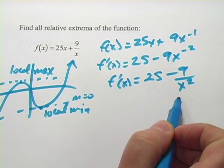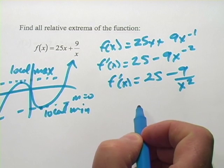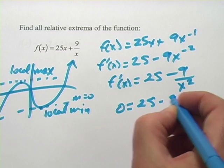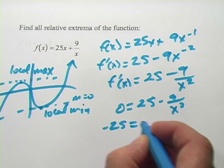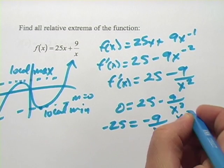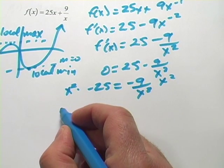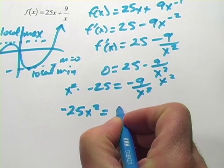Now, we want to solve this by setting it equal to zero to find the zeros of this derivative. So we'll put zero out here, 25 minus 9 over x squared. I'm going to subtract 25 from both sides. And then I'm going to multiply both sides by x squared.